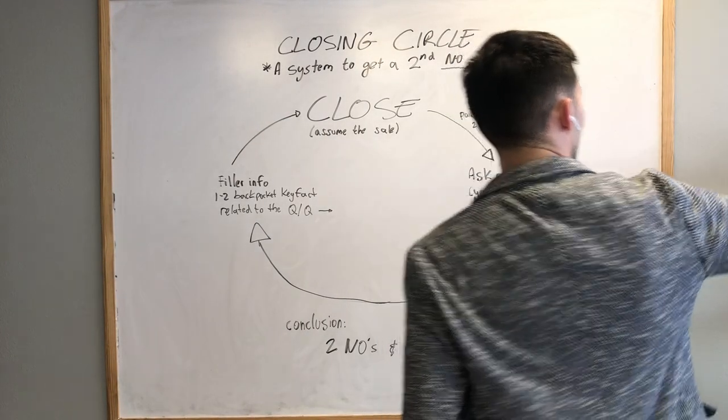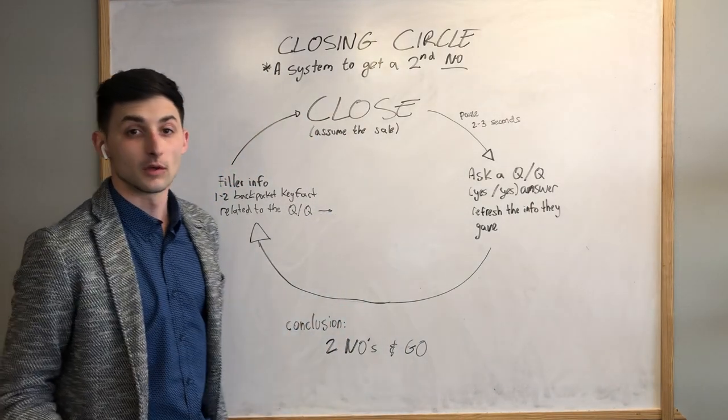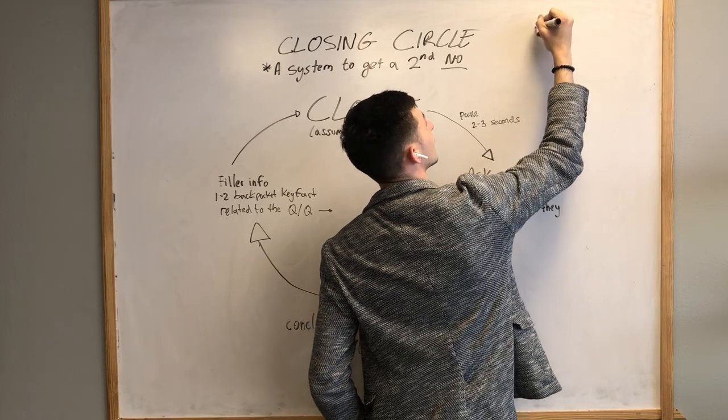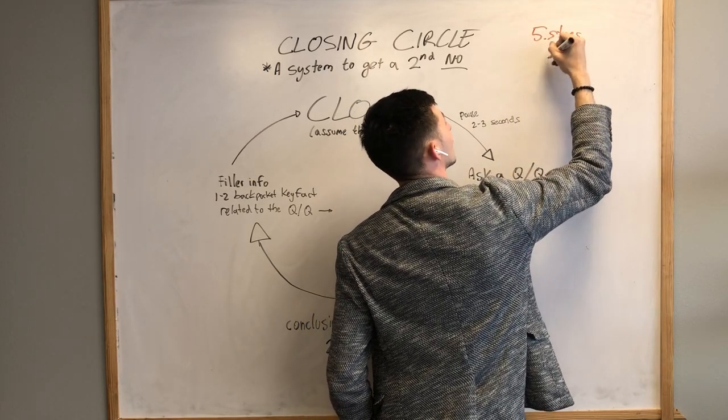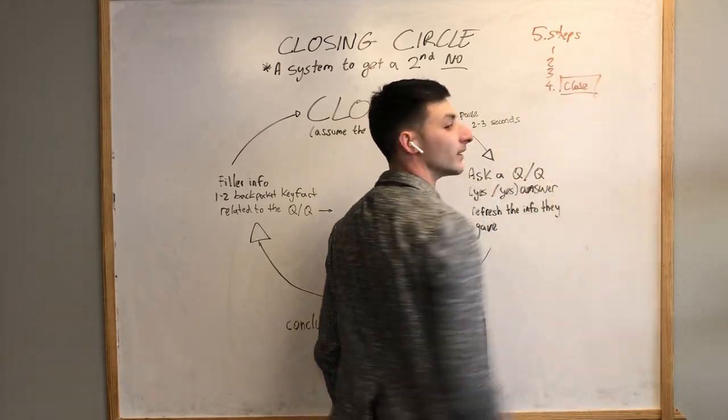The closing circle is a system to get a second no. This is in the five steps - you have to know the five steps to learn the system. There's steps one, two, three, and then step four you get to the close. This is when the system starts.